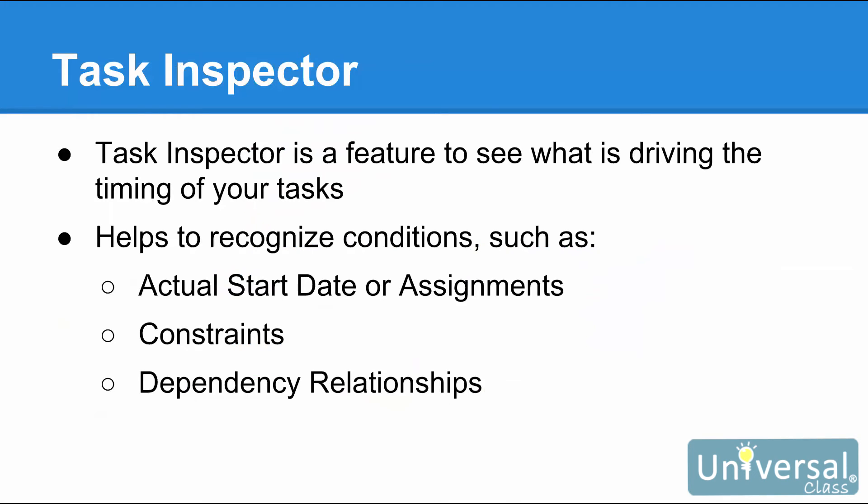The Task Inspector is a feature that lets you know what is driving the timing of your tasks. Since the timing of your tasks is affected by certain conditions, Task Inspector will help you recognize these conditions. The conditions that can affect timing include: the actual start date or assignments — when you've entered a start date or assigned a resource that isn't yet available; constraints — when a constraint is applied that won't allow a task to start until a certain date; and dependency relationships, where a predecessor task can cause a change to a task's timing.